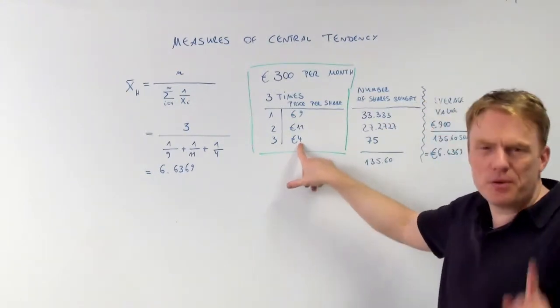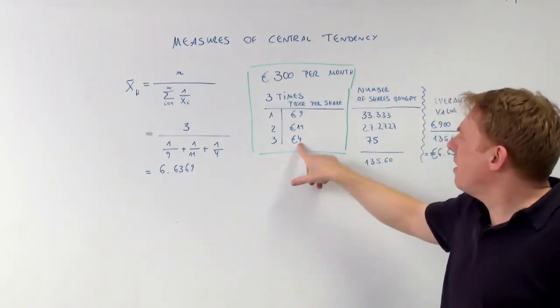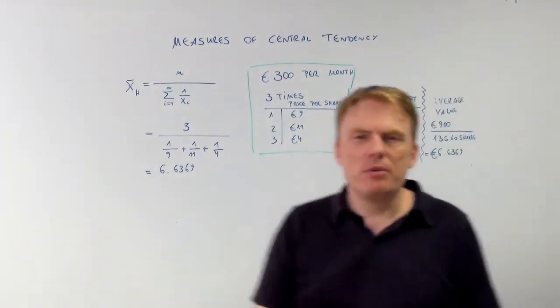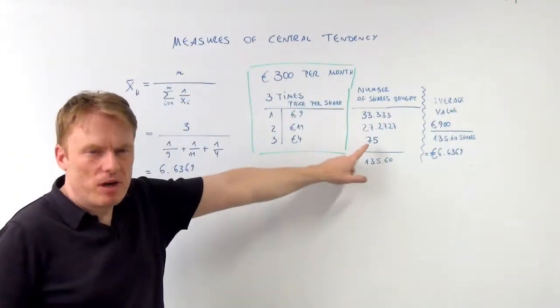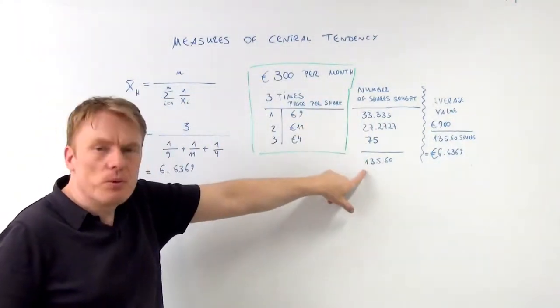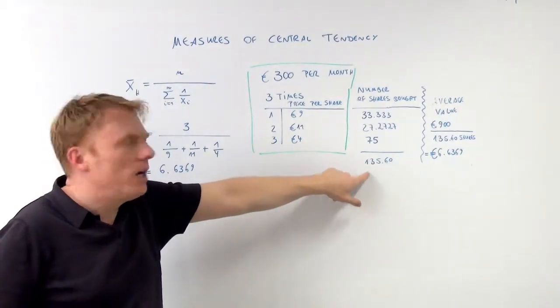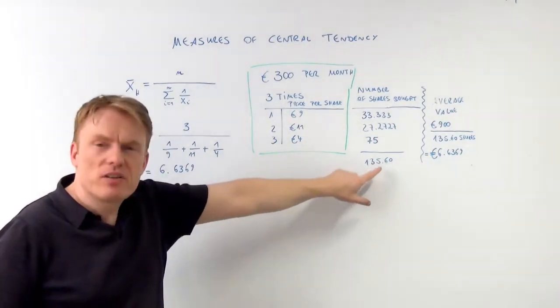And in the third month when you only pay 4 euros, you get 75 shares, which means all in all you get 135.6 shares total.